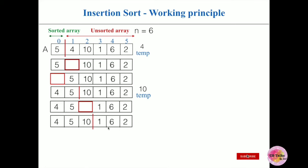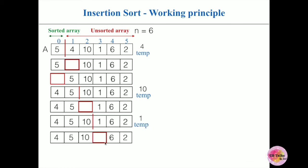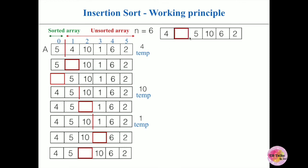Now take 1 and place it in a temp variable — that index becomes an empty space. 1 is compared with 10: 10 is greater than 1 (case 1), so move 10 to the empty space. Again, 1 is compared with 5: 5 is greater than 1, so move 5 to the empty space.